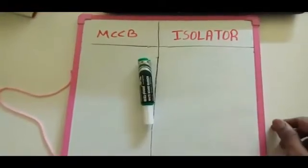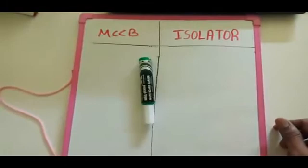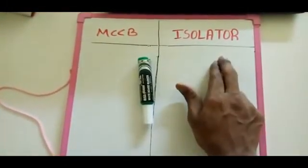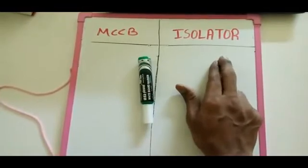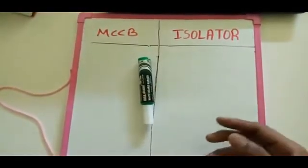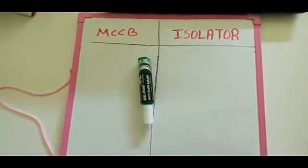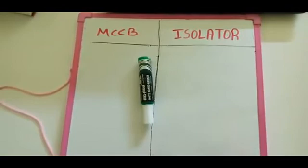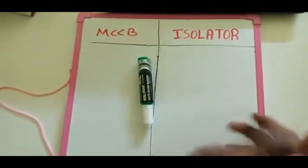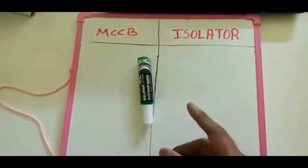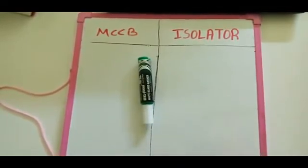Today we are going to see the difference between MCCB and Isolator. MCCB means Molded Case Circuit Breaker. First of all, the MCCB is an automatic operation device — meaning in a fault condition it automatically disconnects the circuit. The Isolator acts like a switch, meaning switch on and switch off.